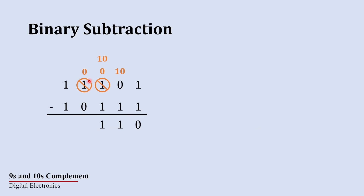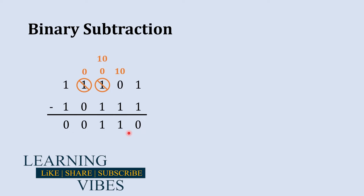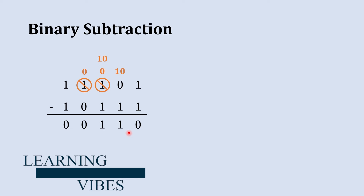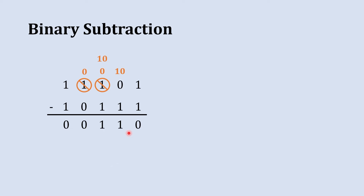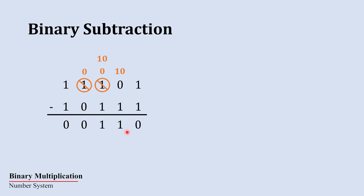In the next column, zero minus zero is zero, and one minus one is zero. So the answer to this subtraction is 1-1-0. To verify, find the decimal equivalents of both binary numbers, subtract them, and check that the result matches the decimal equivalent of the binary answer. The next subtraction is even more complex.